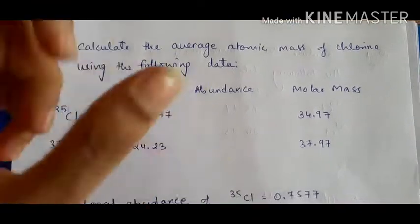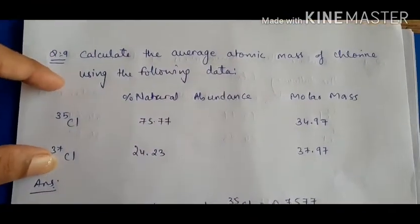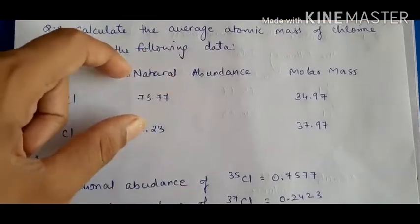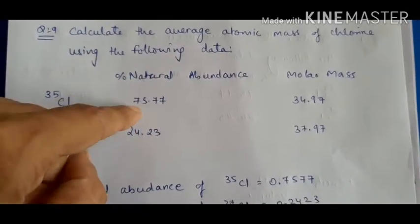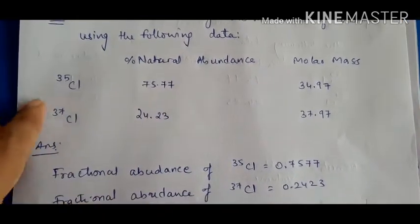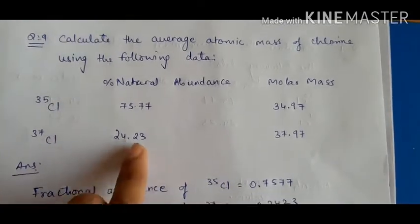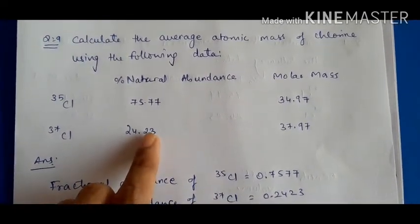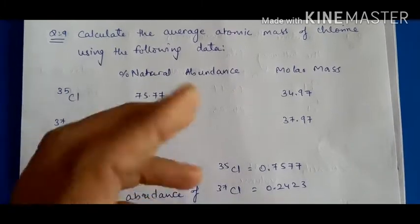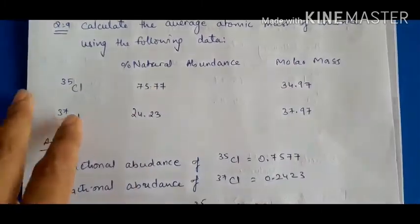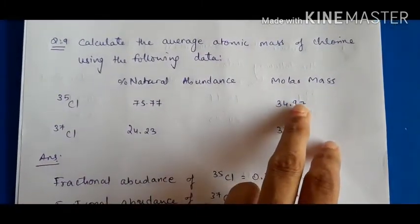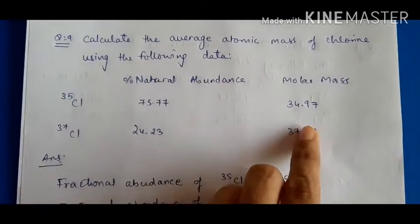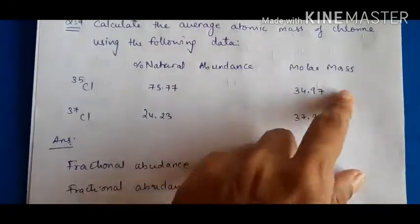Question nine is about finding the average atomic mass of chlorine. Chlorine has two isotopes: chlorine-35 and chlorine-37. In nature, chlorine-35 is found at 75.77% and chlorine-37 at 24.23%. The molar mass of chlorine-35 is 34.97 and chlorine-37 is 37.97.